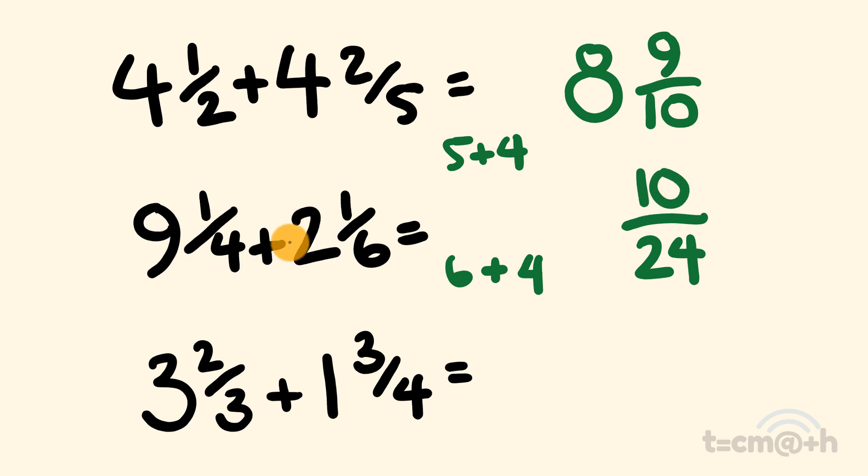Finally, we have nine plus two, that is equal to eleven. Now just a little thing here, you might have to simplify this a little bit further because there's a number that goes into both ten and twenty-four. This can be simplified further to eleven and five over twelve, just by dividing both the numerator and the denominator by two.